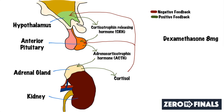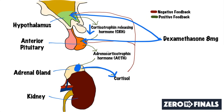Now let's look at the scenario where you have an adrenal gland tumour — an adrenal adenoma — producing loads of cortisol. The large dose of dexamethasone will suppress CRH at the hypothalamus and block ACTH at the pituitary, but it has no effect on the adrenal gland, so you still get a large amount of cortisol being pumped out. The result in an adrenal tumour is high cortisol and low ACTH.